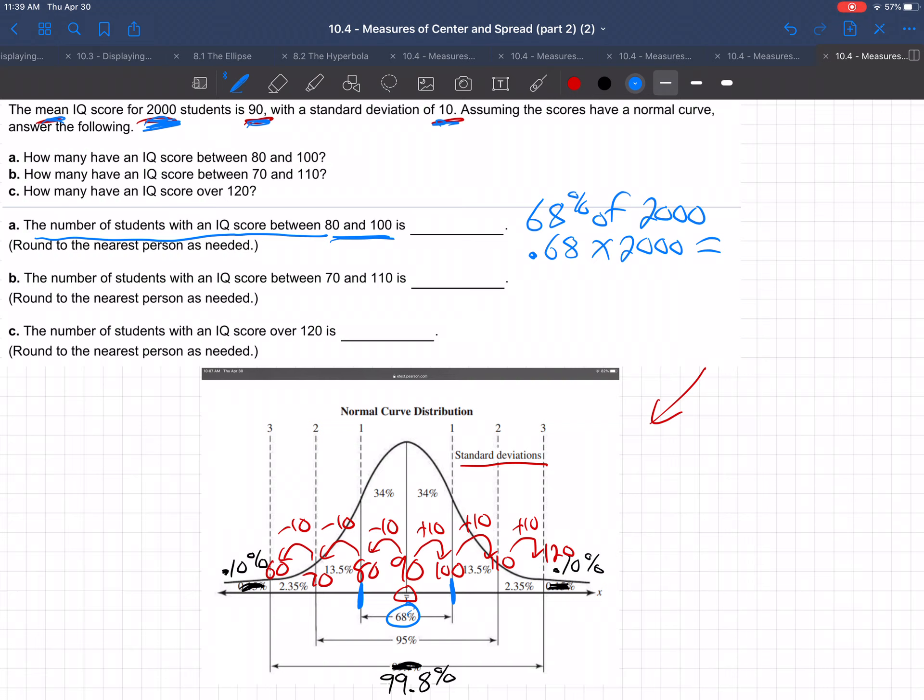.68 times 2,000. And that comes out to be 1,360 students. So you would know for sure if IQ scores are normally distributed. That's the key where we see this normal curve, this bell curve, this normal distribution, bell-shaped curve.